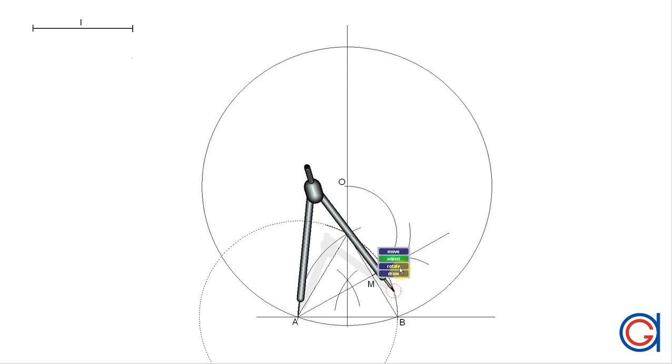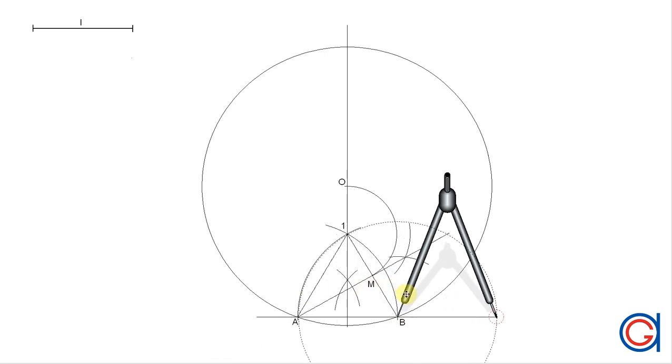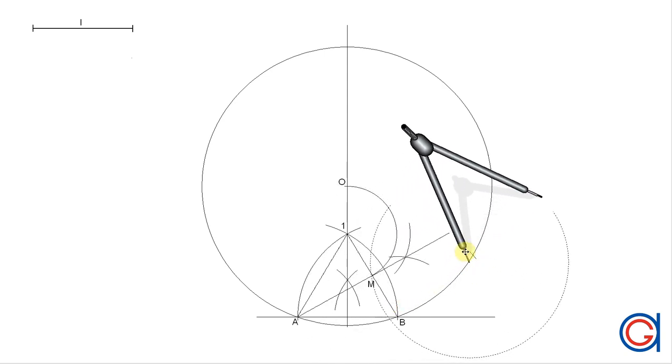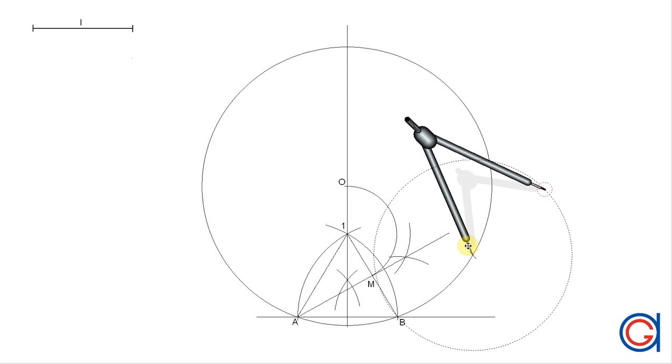So now, setting our compass to the given length AB, we are going to divide our circle into nine parts, which will be the vertices of our nonagon. I remind you that this method is an approximation method with an error of about 5%, which is fine for drawing by hand.